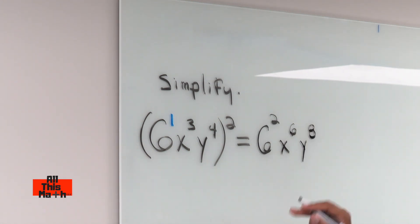6 squared, it's not 12, don't make that mistake. 6 squared is 6 times 6, which is 36. So our final answer is going to be 36 x to the sixth y to the eighth. And that is today's lesson.